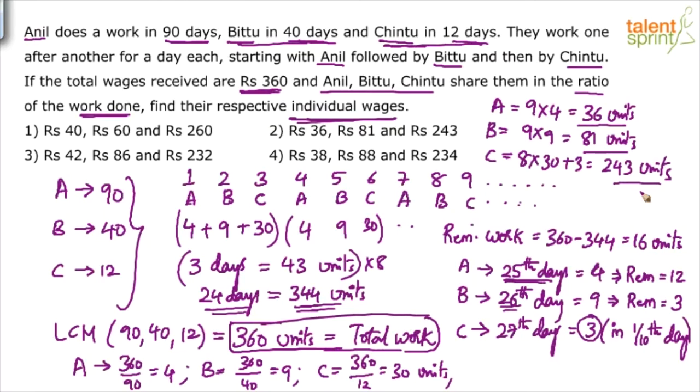Coincidentally, the total amount, 360 rupees matches with the total units of work, 360 units. So basically, 360 units, 360 rupees has to be divided in this ratio. 36 is to 81 is to 243. So obviously, individually will be 36 rupees, 81 rupees, 243 rupees. Take 36 is to 81 is to 243 as the ratio and divide 360. We are lucky that 360 and 360 are same. The total wages and total units of work is same. For each unit of work, you will get 1 rupee. A has done 36 units. He will get 36 rupees. B has done 81 units. He will get 81 rupees. C has done 243 units. So 243 rupees.